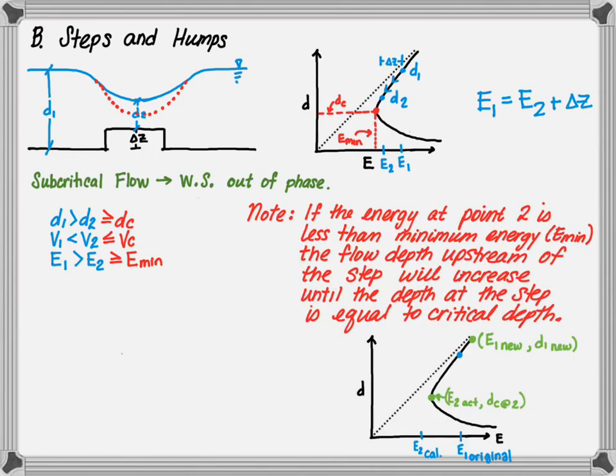Note: if the energy at point two is less than the minimum energy, e-min, the flow depth upstream of the step will increase until the depth at the step equals the critical depth. What you're seeing is a calculation where the elevation at the step falls to critical, causing the specific energy and the depth at point one to increase to the new point. This condition is called backwater.